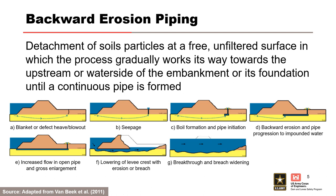In this series of graphics, the potential failure mode is depicted to first initiate due to heave of a clay blanket (Figure A), causing seepage from the sand substratum (Figure B). Flowing water in the sand substratum can cause migration of sand particles, causing a boil out of the ground, which can result in formation of a void or pipe below the boil (Figure C). If a pipe forms and progresses through the sand substratum to the river or reservoir and continues to enlarge (Figure D), it can eventually cause collapse of the overlying embankment and breach (Figures E through G).